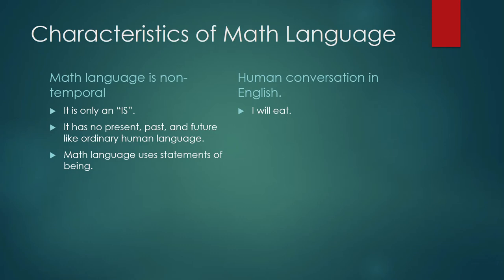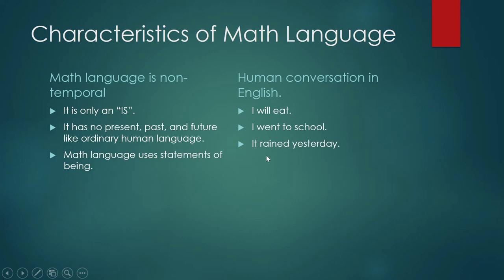Let us compare it with human conversation in English. We say: 'I will eat,' 'I went to school,' 'It rained yesterday.' For languages where verbs have conjugation, this is how you say it. But some languages have no conjugation of verbs — they add an action word and modify it with an adverb, such as 'eat tomorrow' or 'bath yesterday,' meaning 'I took a bath yesterday.' Another statement that indicates time: 'Dogs evolved from wolves' — something that began hundreds or possibly thousands of years ago.